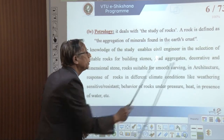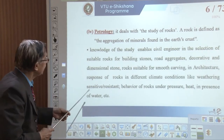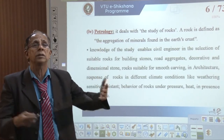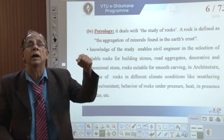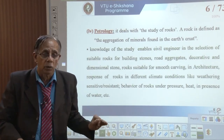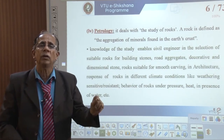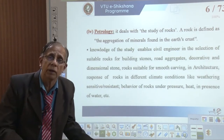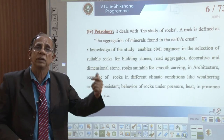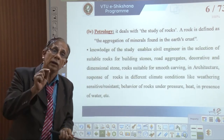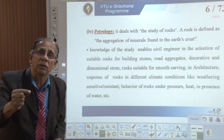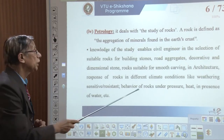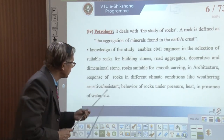In architecture, a beautiful, attractive rock is important. The response of a rock to different climate conditions matters greatly. For example, the Gomateshwara statue at Shravanabelagola has stood for several hundred years in open air without being affected by the atmosphere — its color and appearance entirely retained. On the other hand, the soft stone at Belur is kept inside, covered from heat and rain. There are certain rocks very sensitive to weathering, and some that are resistant. Depending on the climate, I must select a suitable rock.